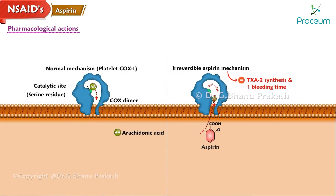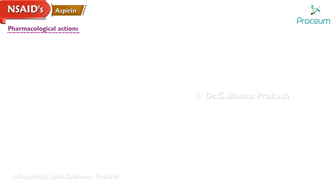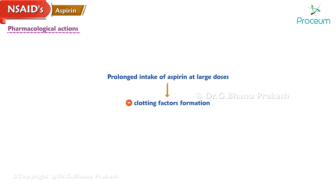Aspirin acts by inhibiting thromboxane A2 synthesis, irreversibly blocking acetylation of serine residue and inhibiting the enzyme cyclooxygenase-1. It is the only non-steroidal anti-inflammatory drug that can irreversibly exhibit anti-thrombotic efficacy. It inhibits platelet aggregation by increasing the levels of prostacyclin and increasing bleeding time.